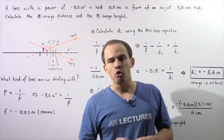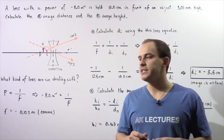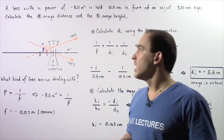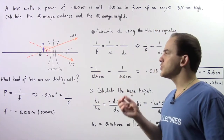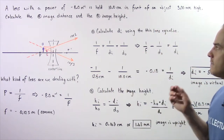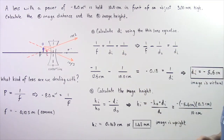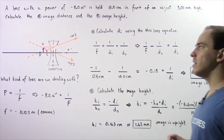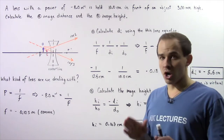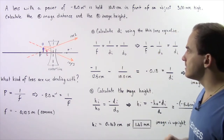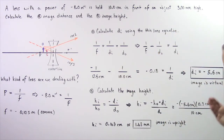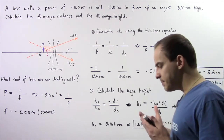Let's look at the following example that deals with thin lenses. Suppose a lens with the power of negative 8.0 meters to the negative 1 is held 10 centimeters in front of an object 3.00 millimeters high. We want to calculate in part A the image distance and in part B the image height.